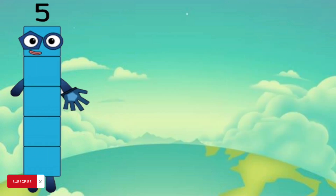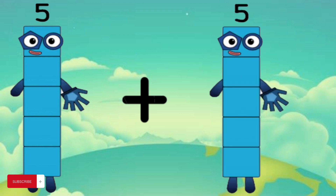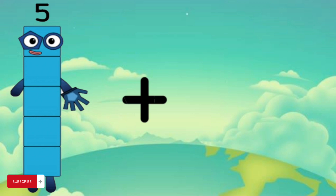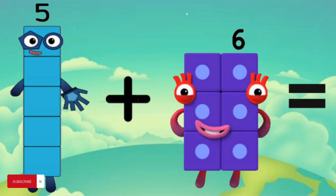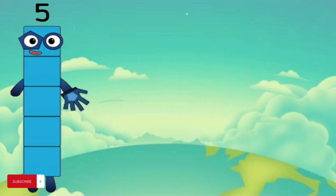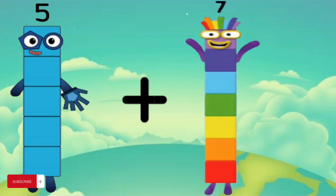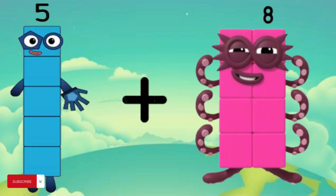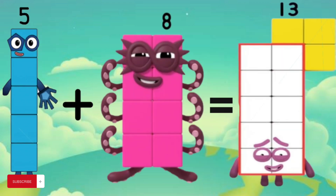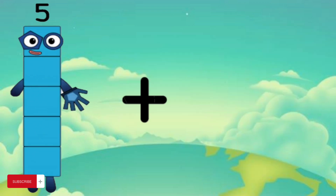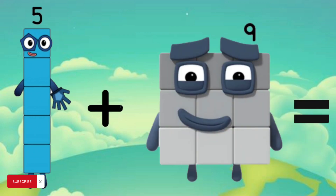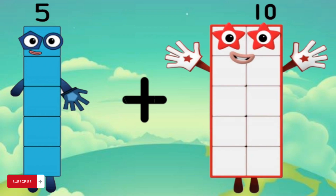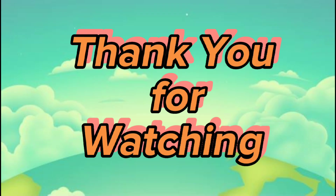Five plus five equals ten. Five plus six equals eleven. Five plus seven equals twelve. Five plus eight equals thirteen. Five plus nine equals fourteen. Five plus ten equals fifteen. Thank you for watching! Please don't forget to subscribe!